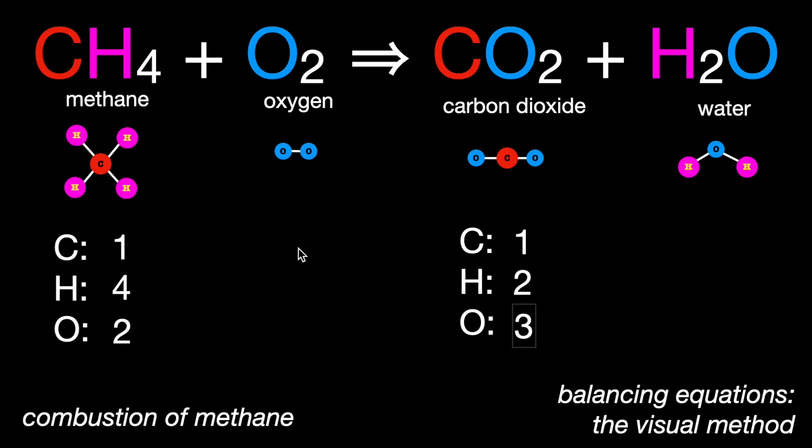So it looks like carbon is already balanced. That's a good sign. Let's move over to the hydrogen. How do we get from two to four? Well, we're simply going to double this molecule here, and that will double our total hydrogen. But it is also going to change the number of oxygen on this side.